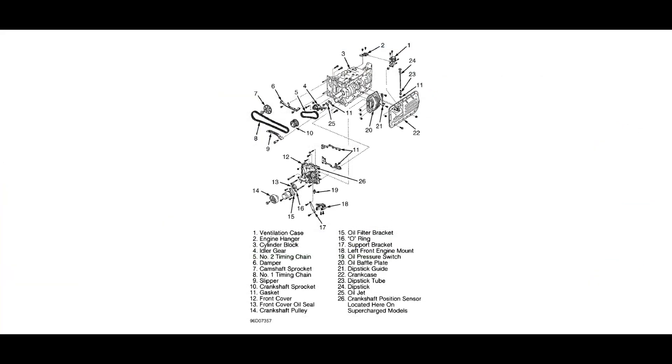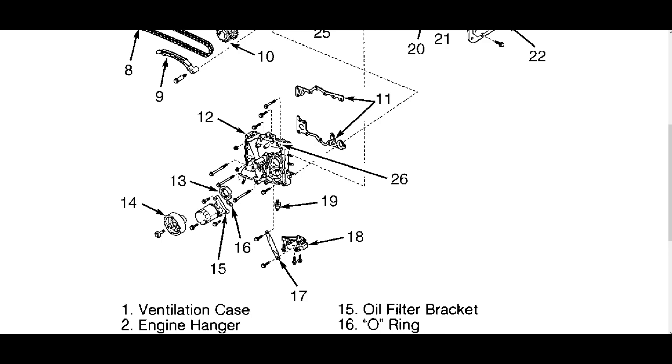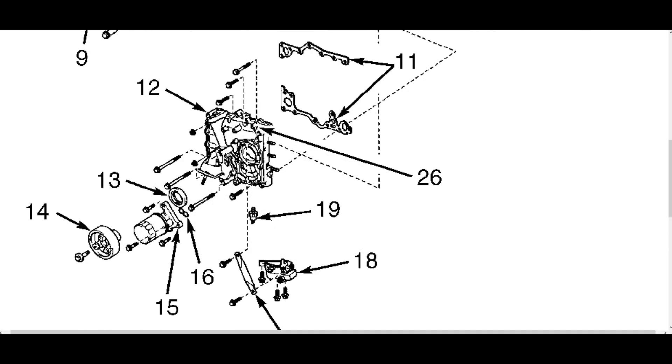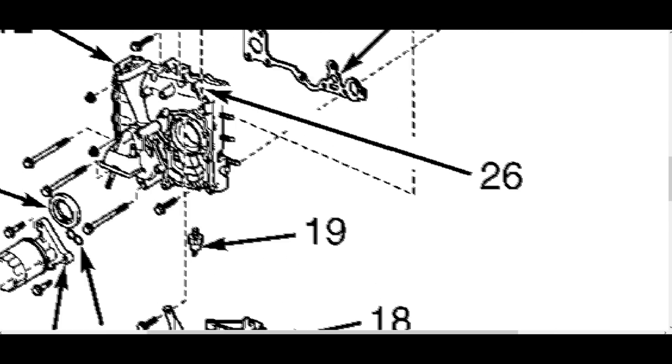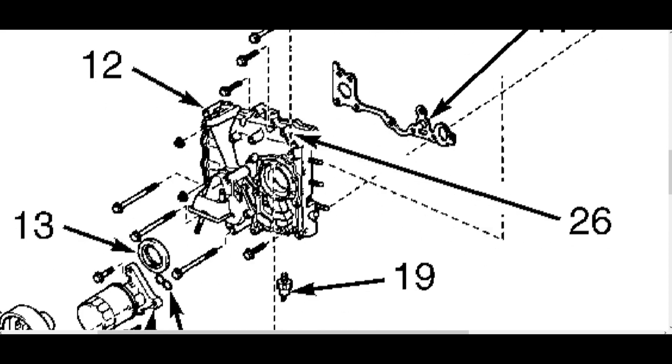Right here it's showing you that the crankshaft position sensor is 26. I'll zoom in on that. That's 26 there. A bit better view, the sensor should be right there.